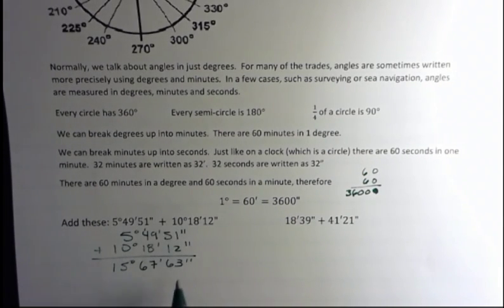So I just added them up, but I can't leave 63 seconds. Because if I have 60 seconds, I have a minute. So what I'm going to do is subtract 60, and that's going to leave 3 seconds. And I'm going to add one. And then I can't have 68 minutes, so I have to subtract 60 from that. And that leaves 8 minutes. But what do I get when I have 60 minutes? I have one degree. So I add that on there. So my final answer is going to be 16 degrees, 8 minutes, and 3 seconds.